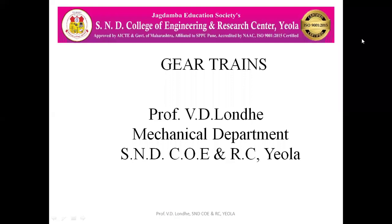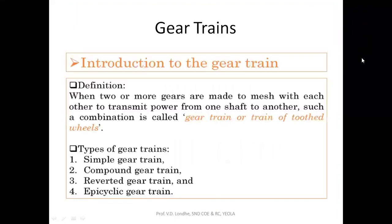Today we are going to see gear trains and their applications. A gear train is the combination of gears mounted on shafts so as to transmit power from one shaft to another. It is also called a train of tooth wheels. There are different types of gear trains: simple gear train, compound gear train, reverted gear train, and epicyclic gear train.